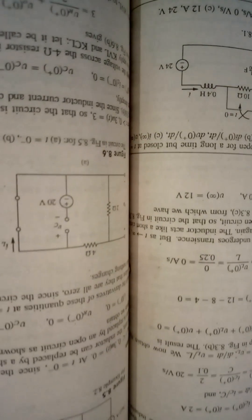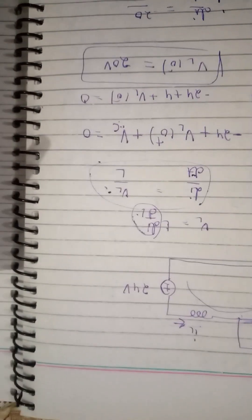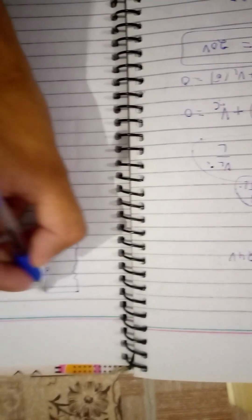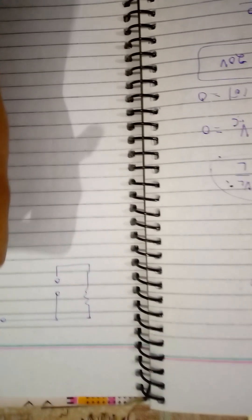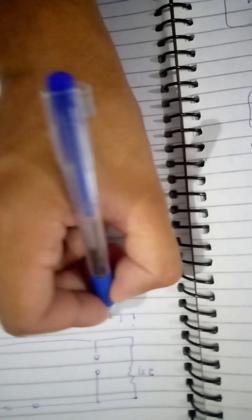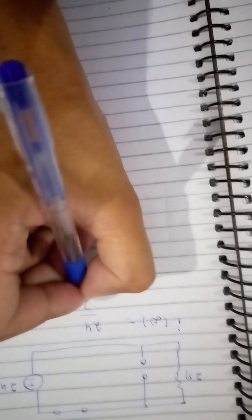At t = ∞, the capacitor becomes an open circuit and the inductor becomes a short circuit. With the 24 volt source and 2 ohm resistor remaining: i(∞) = 24 / 2 = 12 amperes, and v(∞) = 24 volts since the voltage source is directly connected. That completes problem 8.1. Thank you for watching.